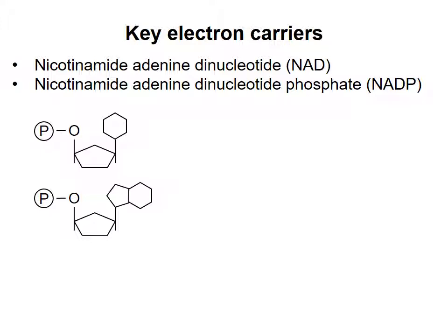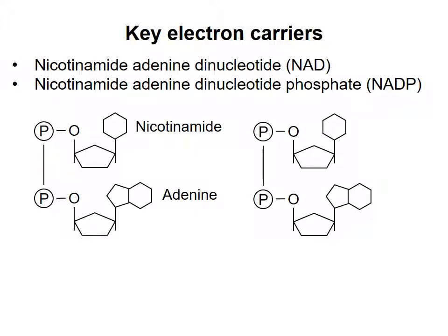In NAD and NADP, one nitrogenous base is adenine and the other is nicotinamide, and the two nucleotides are joined together through the phosphate groups. The only difference between NAD and NADP is that NAD has a hydroxyl group on carbon 2 of the sugar of the adenine nucleotide, while NADP has a phosphate group attached to this carbon.